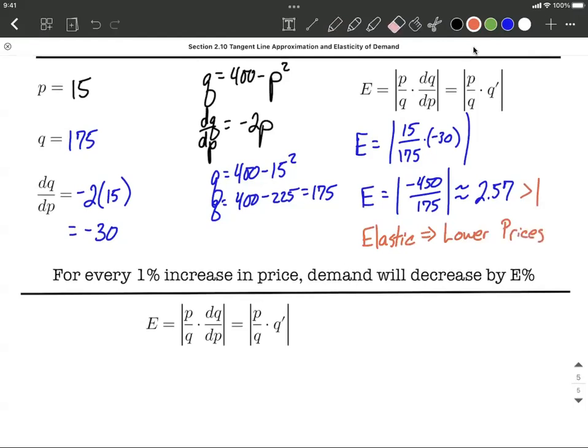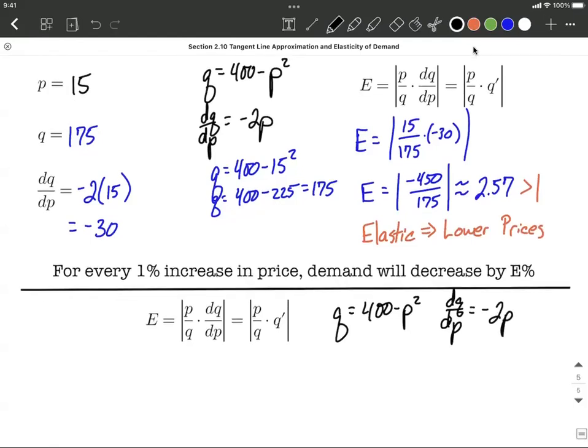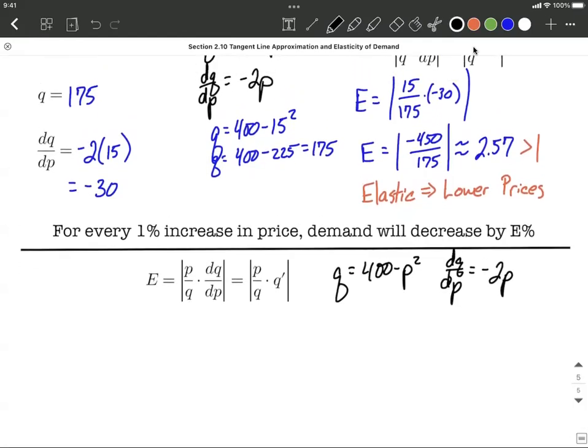Last one, remember we had q was given to us as 400 minus p squared, and we computed dq/dp was equal to negative 2p. Same information, just bringing it down to the last part. So in this last part, our goal is, we want to come up with exactly what price should we be selling this for if we want to maximize our revenue. Filling in to the elasticity of demand formula one more time.